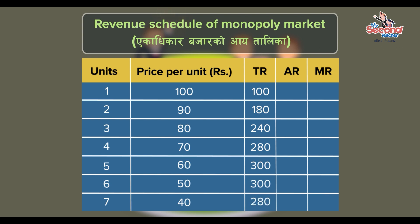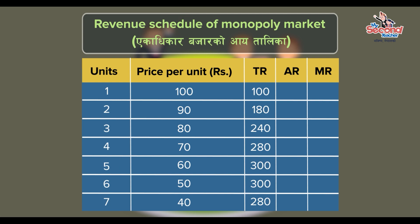Average revenue is calculated by dividing total revenue by the respective quantity sold. So average revenue is: 100, 90, 80, 70, 60, 50, and 40 rupees.